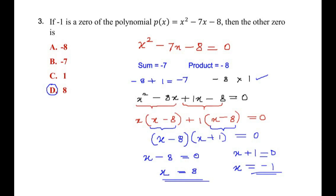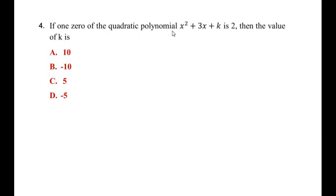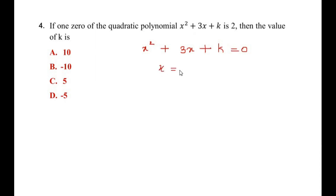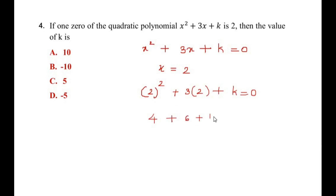The fourth question: if 1 zero of the quadratic polynomial x squared plus 3x plus k is 2, then the value of k is? Since 2 is a zero, substituting x equals 2 makes the polynomial equal to 0. So we write 2 squared plus 3 times 2 plus k equals 0, giving us 4 plus 6 plus k equals 0.